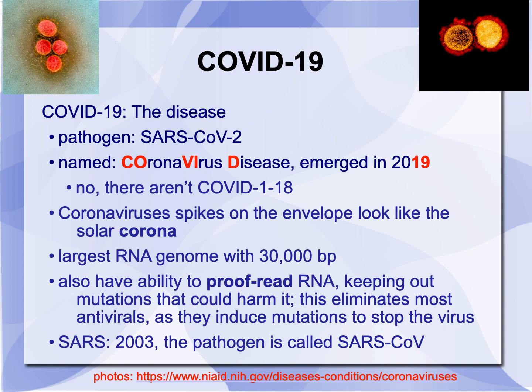Coronaviruses also have the ability to proofread RNA and keep out mutations that could harm it. This eliminates most of our antivirals, because what antivirals do is induce mutations to screw up the virus — but this one can see and correct those mutations. SARS-CoV-2 is closely related to SARS, which came out in 2003; the pathogen for that is just SARS-CoV, while our current pandemic pathogen is SARS-CoV-2.